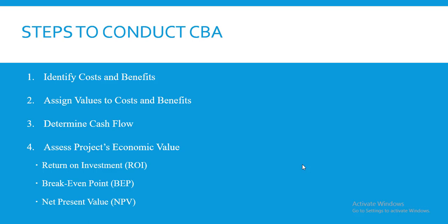The next metric is the break-even point, which assesses the time period taken to move from incurring a cost to actually receiving a benefit or income. The shorter the break-even period, the better. The last metric is the net present value, which takes into consideration a number of factors.